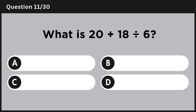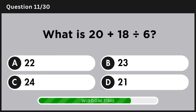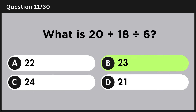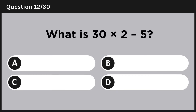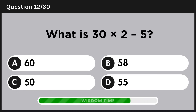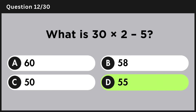What is 20 plus 18 divided by 6? Answer B: 23. What is 30 multiplied by 2 minus 5? Answer D: 55.